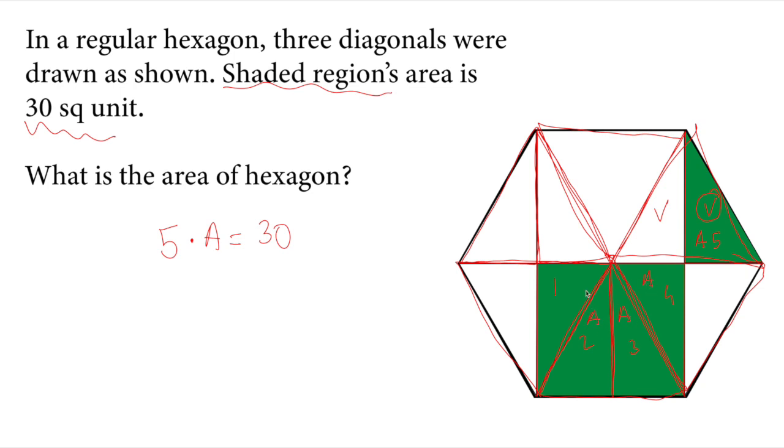And if I count them, I will have five A's. Divide each side by five. So each triangle's area will be six.